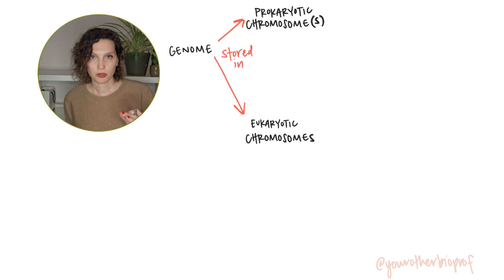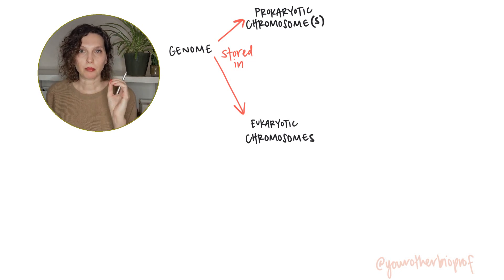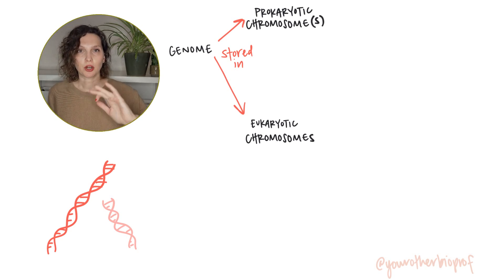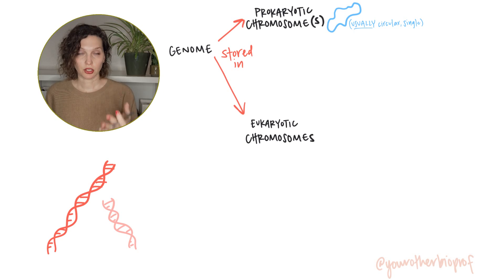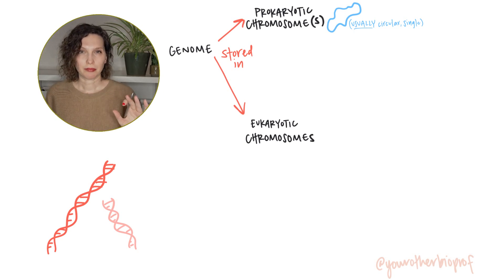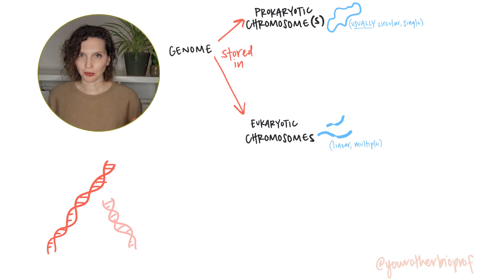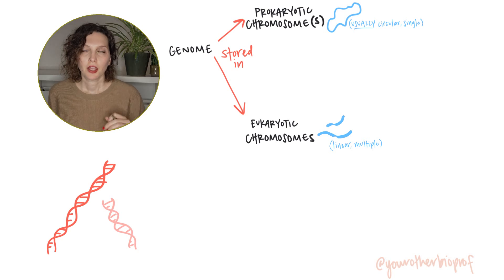Each chromosome is a single molecule of DNA. In prokaryotes, like bacteria, chromosomes are circular, whereas in eukaryotes, like you and me, chromosomes are linear, meaning they have ends — they're sort of stick-like. We're going to focus on eukaryotic chromosomes for the rest of this.